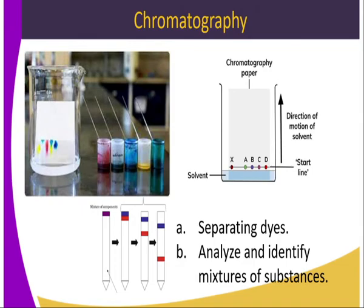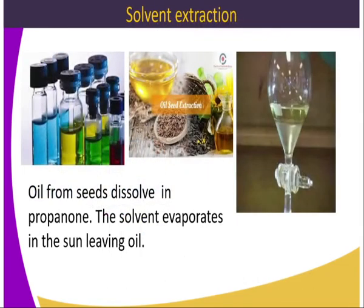Chromatography can be used to separate dyes and analyze and identify mixtures in a substance. We also have solvent extraction, which basically separates oil from seeds dissolved in a given solvent. We don't use water because oil does not dissolve in water, but we use organic solvents such as propanone, through which oil can dissolve. We will look at the procedure later and see how we can extract oil from substances such as groundnuts and corn.